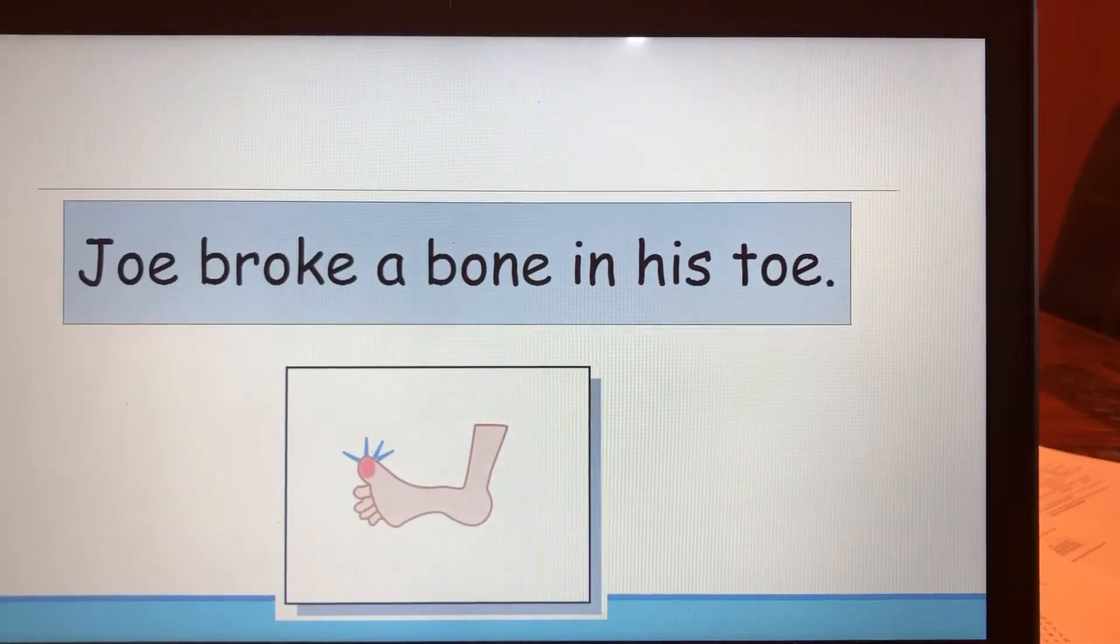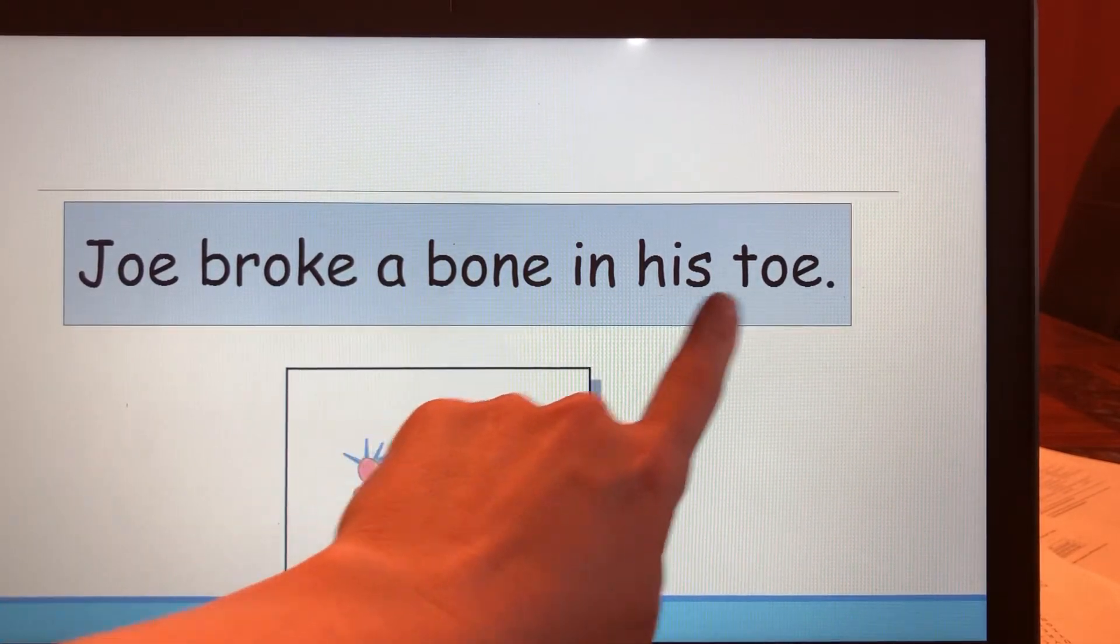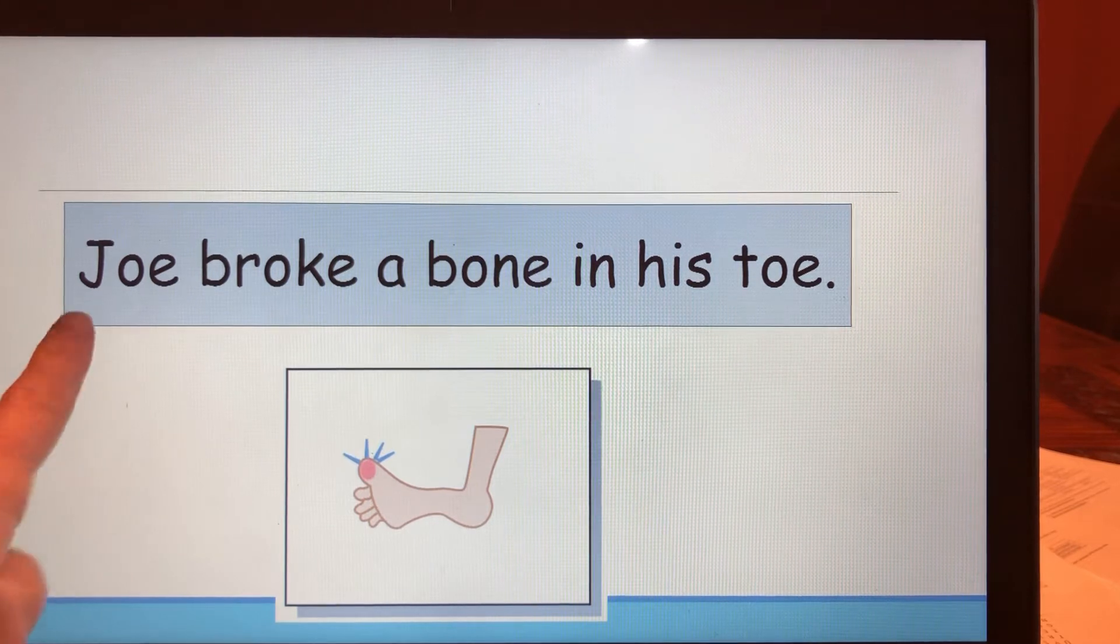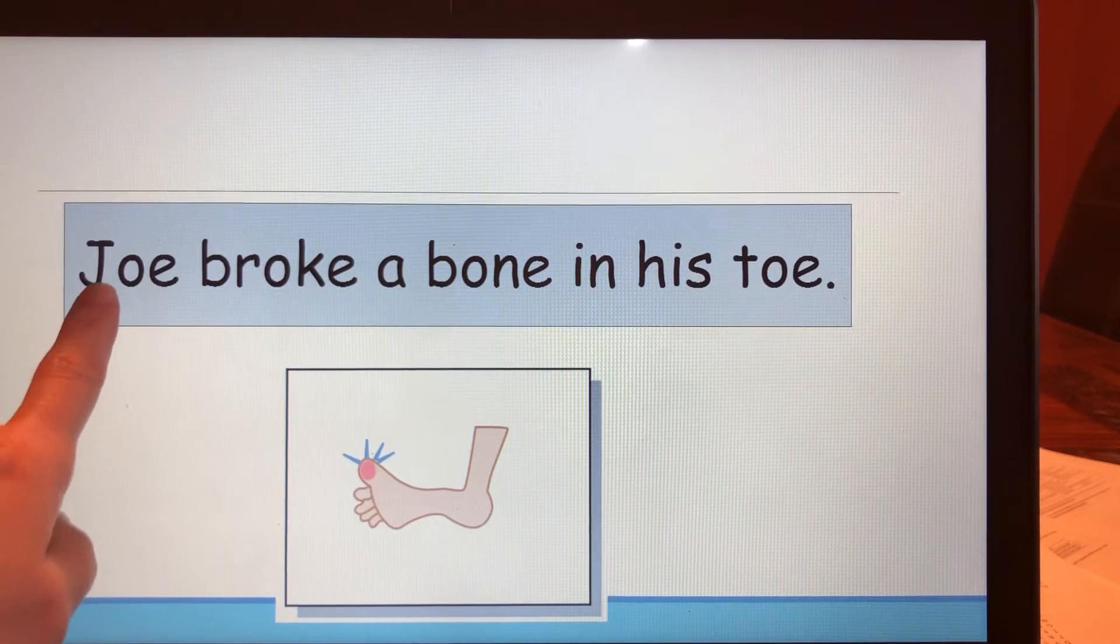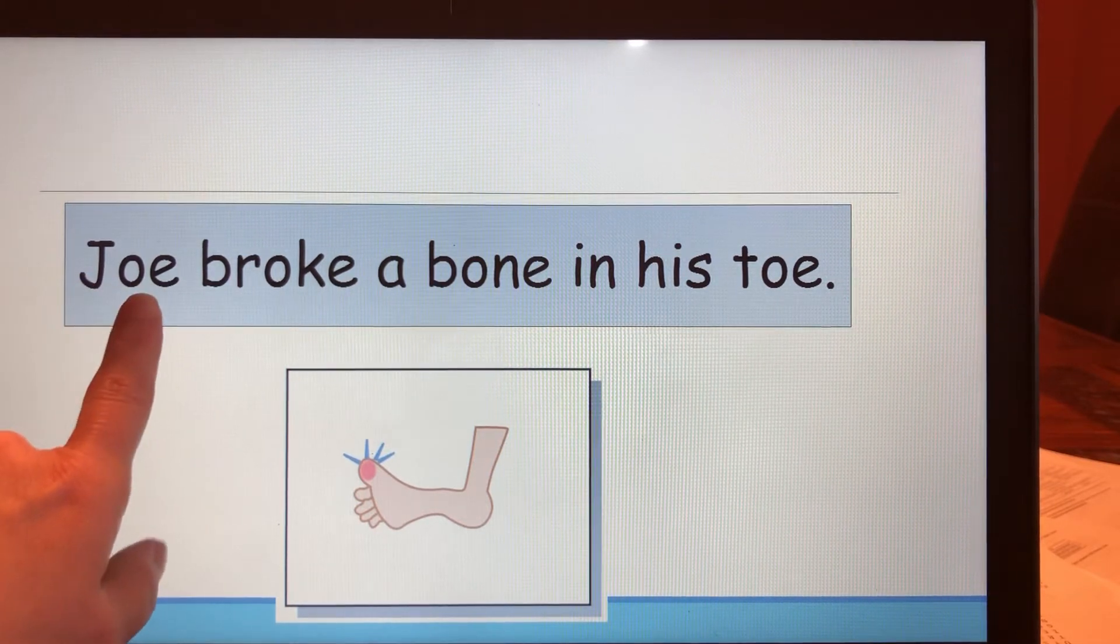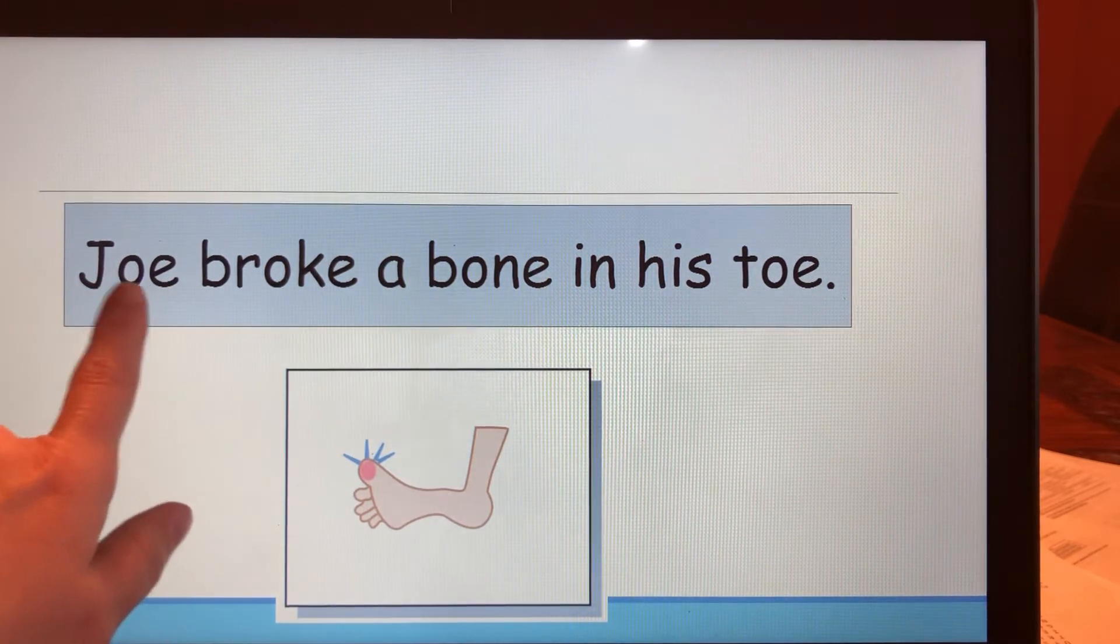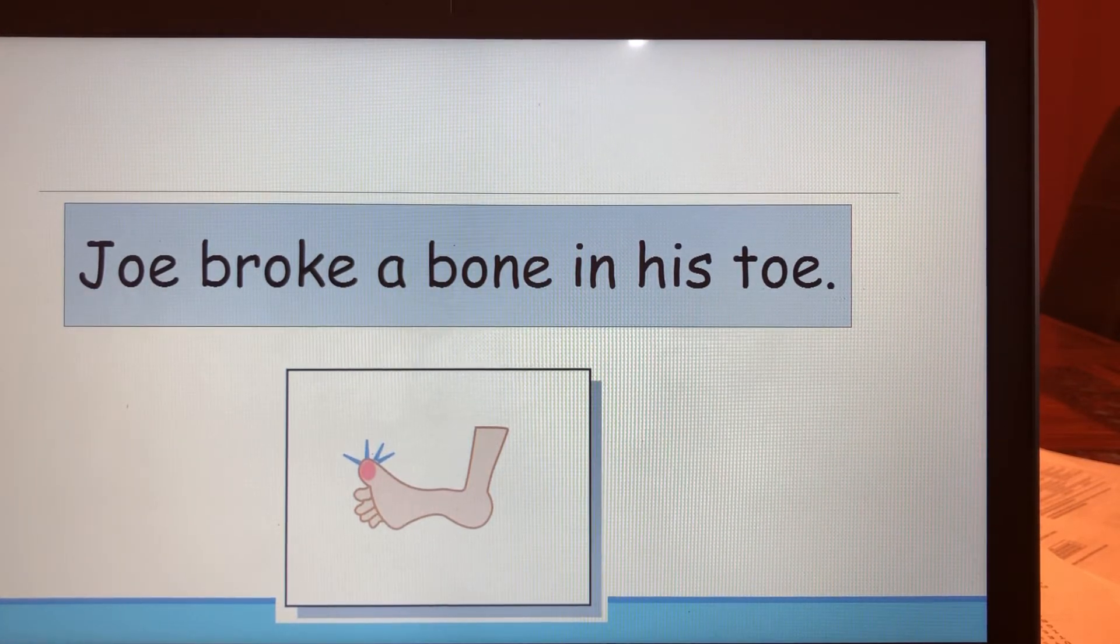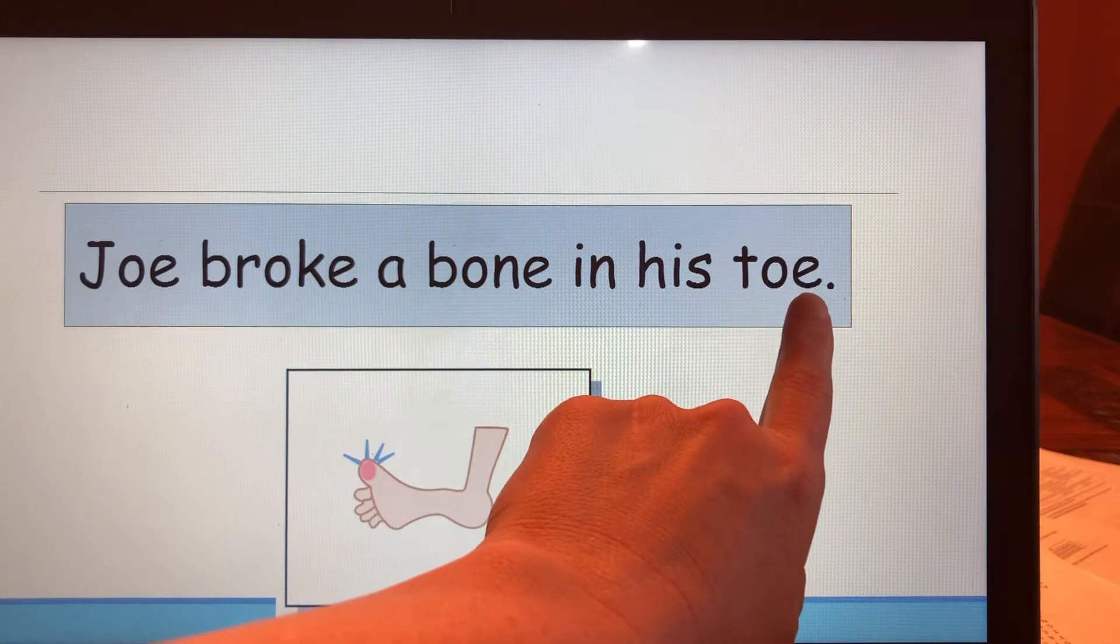All right, let's check your work. Joe broke a bone in his toe. Let's check for several things that are kind of hard to remember. Did you start with a capital J? For two reasons: it's the beginning of the sentence, and if it's someone's name, we have to start with a capital letter. I use J-O-E to spell Joe. Some people do spell Joe J-O. That's okay. But since we worked on digraph OE today, I made sure to spell Joe with OE. If you didn't, that's okay because people's names don't always follow the rules.